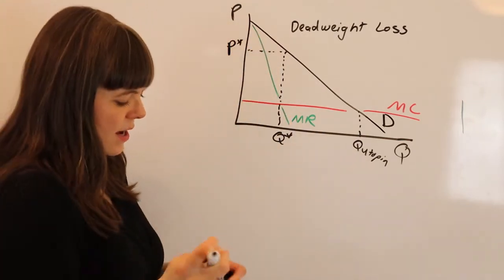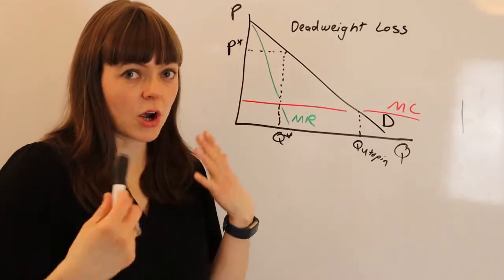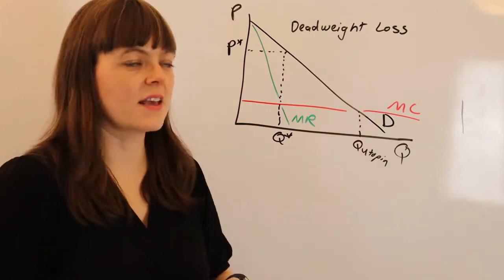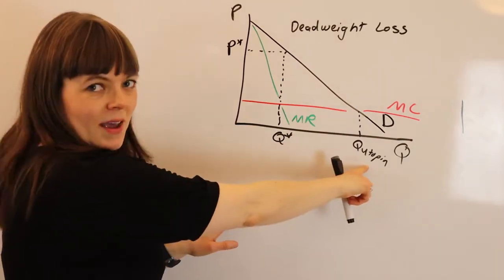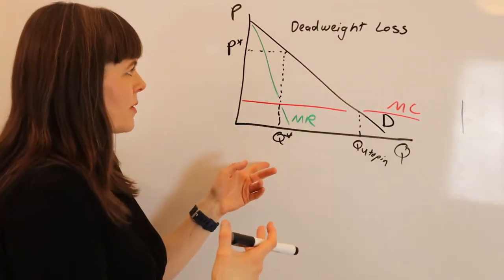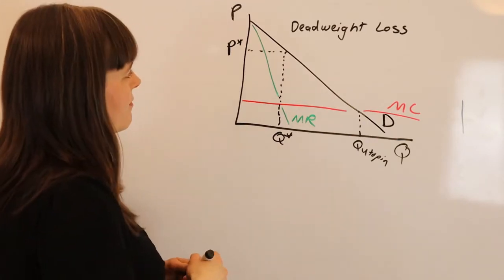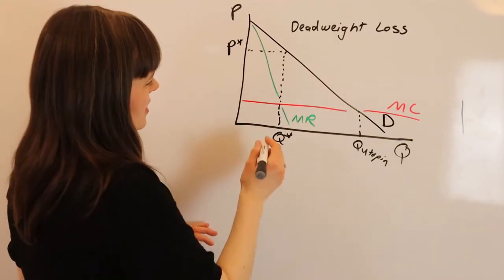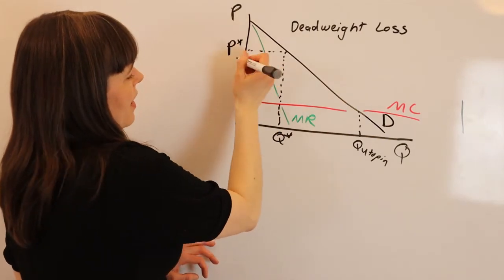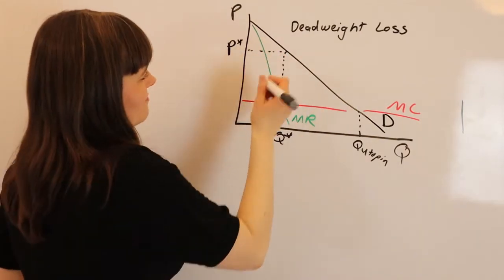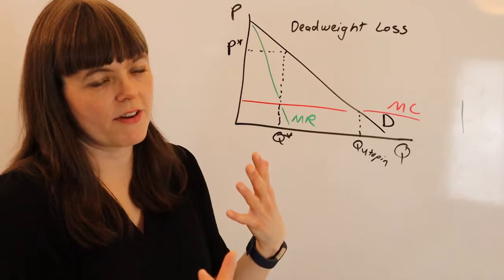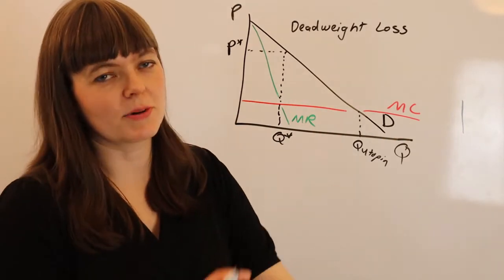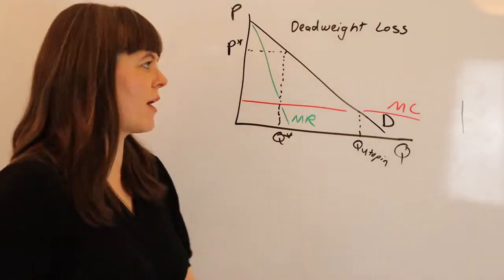In which case, we can compare the total surplus in the utopia versus the actual monopoly. In the monopoly, we have to find producer surplus. Producer surplus is going to be the profit - or this actually is not necessarily profit if we account for fixed costs, but let's just ignore fixed costs for right now.